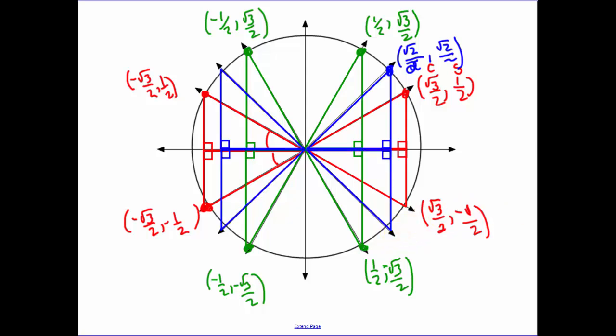So now that I've flipped those around, our 45s, we have here, the only thing that changes is our x's become negative. Here, both x and y is negative. Here, just our y's are negative.